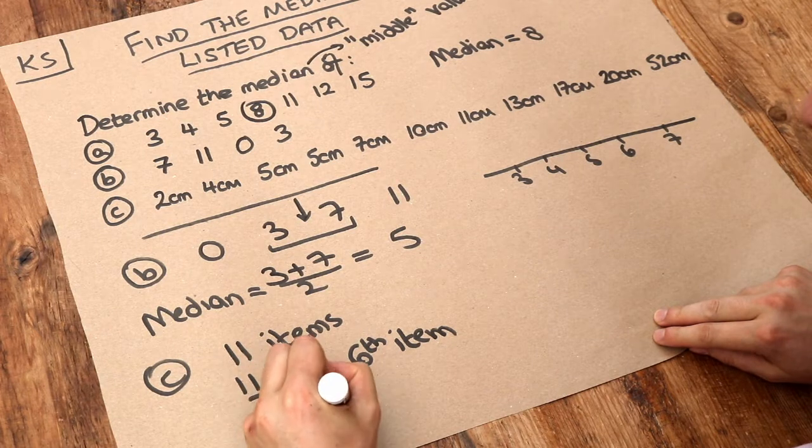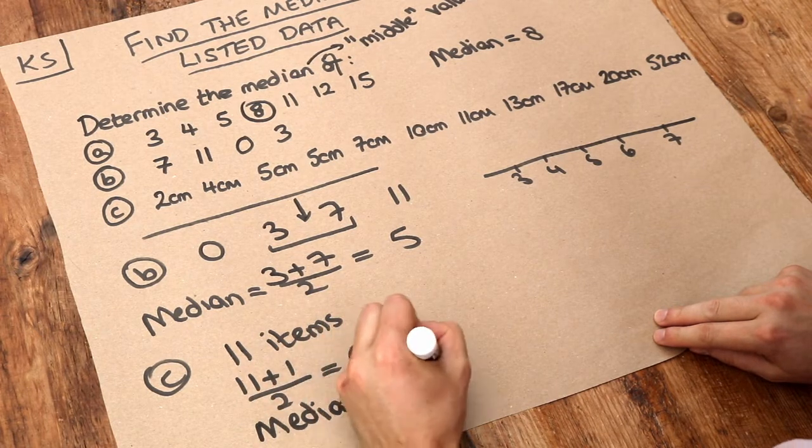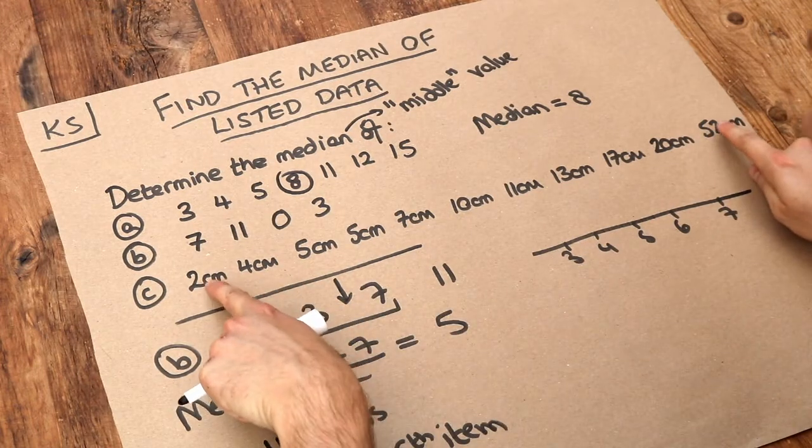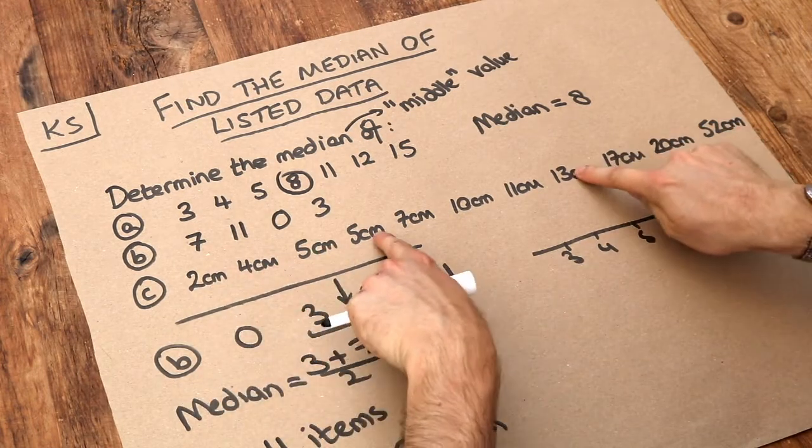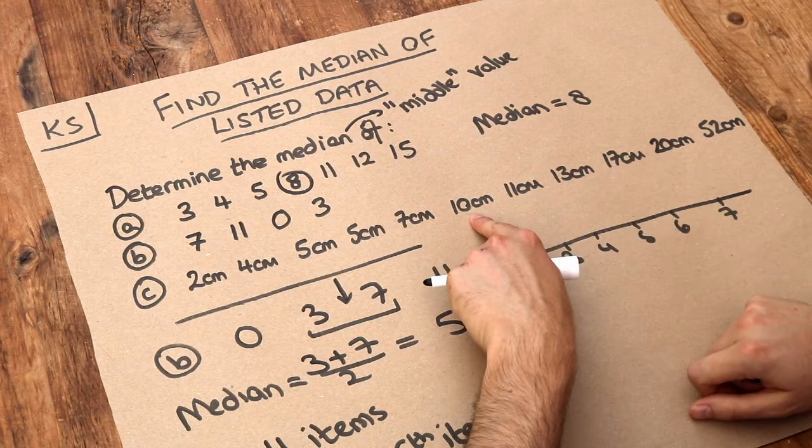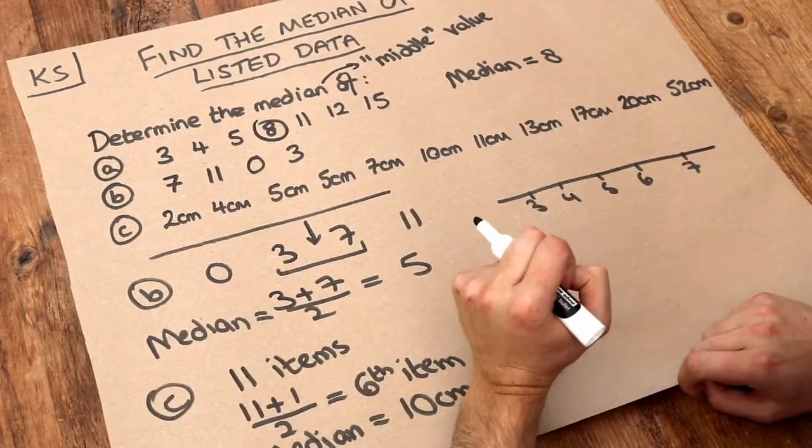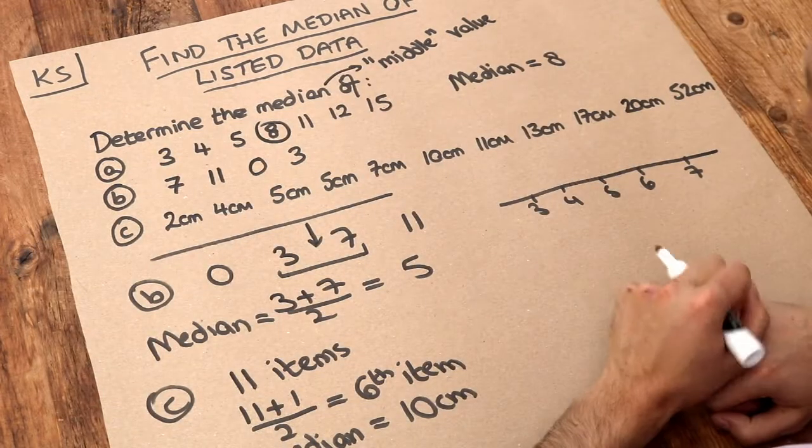And if you don't like that trick, then you don't need to use it. You can just count inwards from the end and we get to the 10 centimeters. But this method is useful if we have a large number of items and we don't want to have to try and count towards the middle.